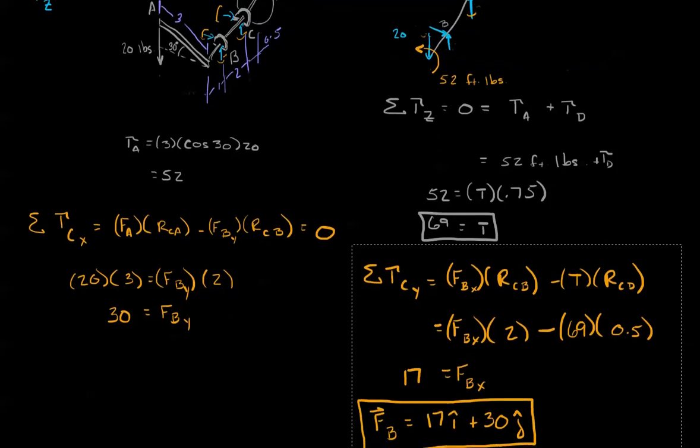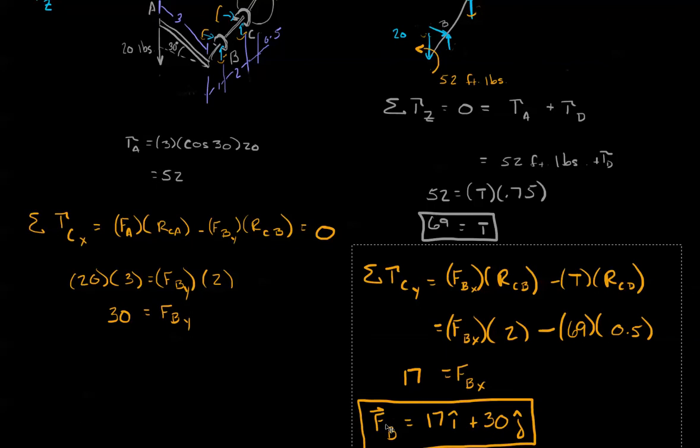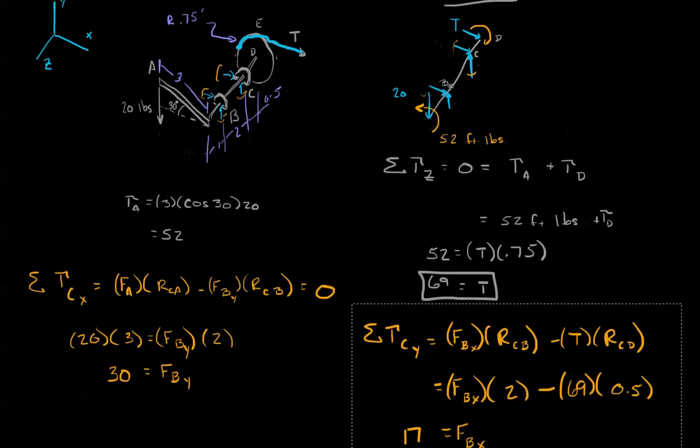This means our total vector of the reaction force at B is 17 pounds in the i direction plus 30 pounds in the j direction. Now, I want to make one note on our free body diagram. Generally on your free body diagram, you do put down distances. I didn't want to make it too loose, so please forgive me for playing a little bit fast and loose.